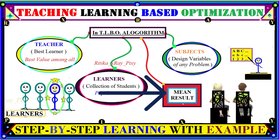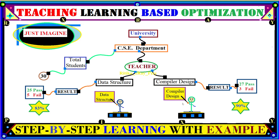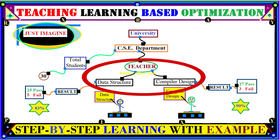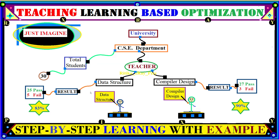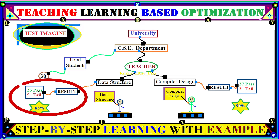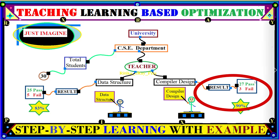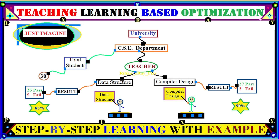In this algorithm, we have the mean result. For example, imagine in a university's computer science department we have 30 students and a teacher for data structures and compiler design. After the teaching learning procedure and examination, 25 out of 30 students passed data structures and 27 out of 30 passed compiler design — giving 83% and 90% results respectively. This is how we check the teacher's effect on learners.